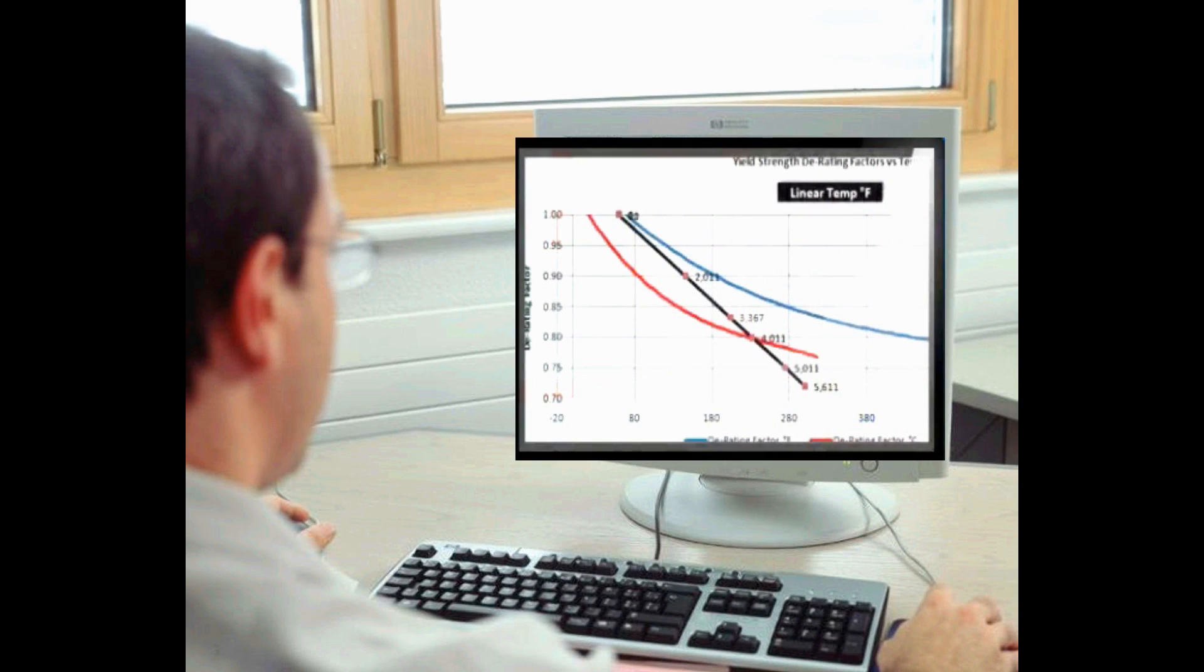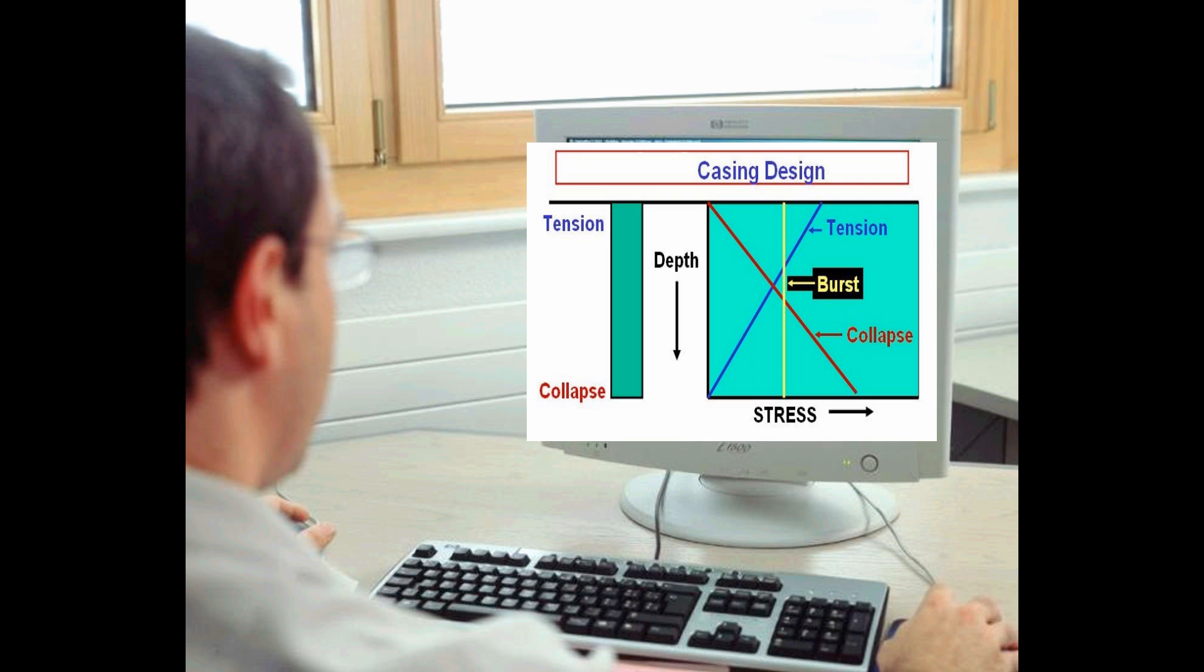Of course, if a thicker wall is used, the engineer must account for this weight in his calculations for the rest of the strings.